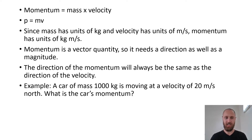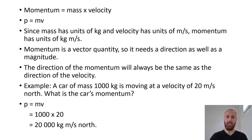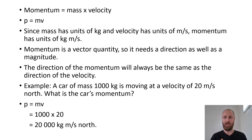The direction of the momentum is always going to be the same as the direction of the velocity. Here's a quick example: you've got a car, mass of 1,000 kilograms, moving at a velocity of 20 meters per second north. What is the car's momentum? The calculation is pretty easy — momentum is mass times velocity, so 1,000 times 20 gives us 20,000 kilogram meters per second north. Make sure you're including a number, some units, and a direction when talking about momentum.